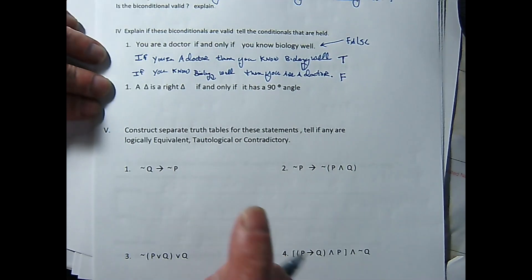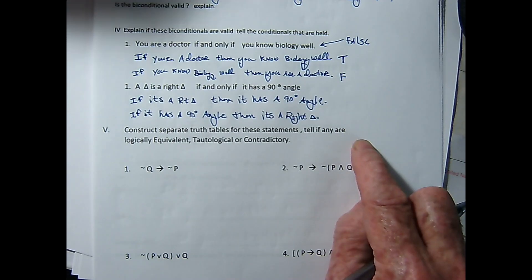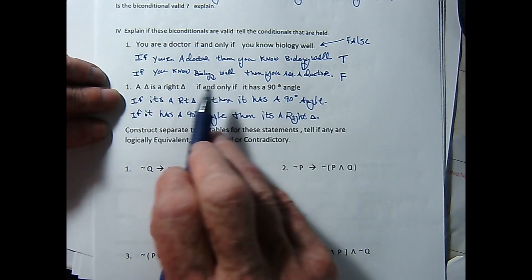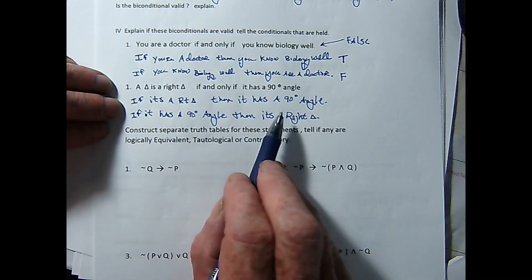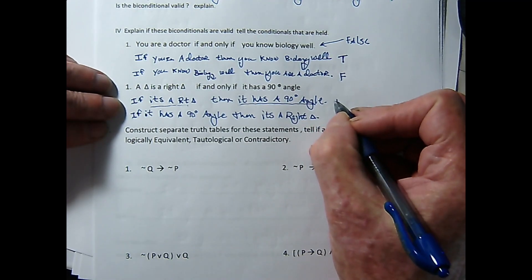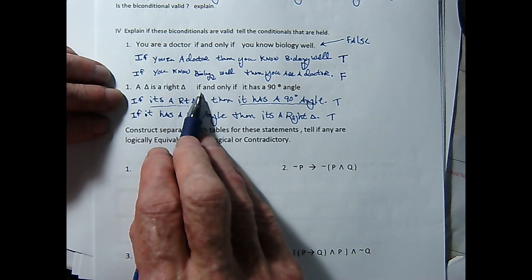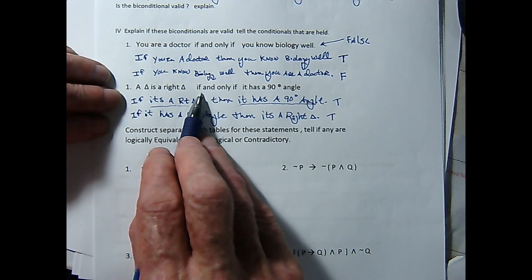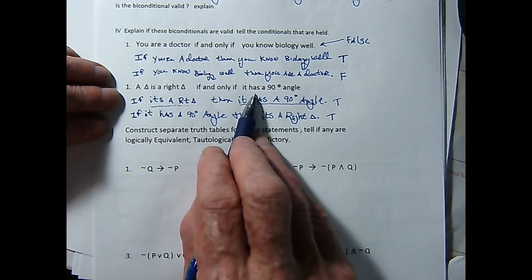One more of those. A triangle is a right triangle if and only if it has a 90 degree angle. It has two conditionals there somewhere — let's find them. This biconditional holds these two conditionals: if it's a right triangle, then it has a 90 degree angle — that's certainly true. And if it has a 90 degree angle, then it's a right triangle — that's also true. So I can confirm that this biconditional is, in fact, a valid biconditional. In fact, it's the definition for a right triangle: a triangle is a right triangle if and only if it has a 90 degree angle in it.